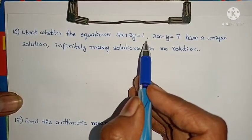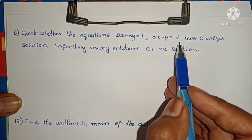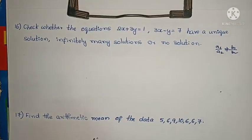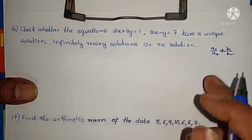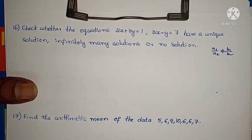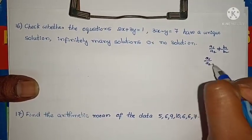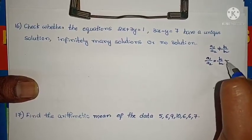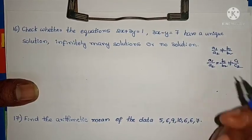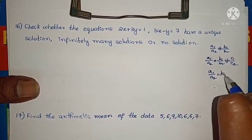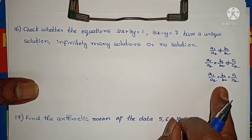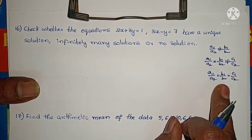Next problem — question 11: check whether the equations 2x + 3y = 1 and 3x − y = 7 have a unique solution, infinitely many solutions, or no solution. There are 3 conditions. If a1/a2 ≠ b1/b2, lines are intersecting — consistent, unique solution. If a1/a2 = b1/b2 ≠ c1/c2, lines are parallel — inconsistent, no solution. If a1/a2 = b1/b2 = c1/c2, lines are coincident — infinite solutions.